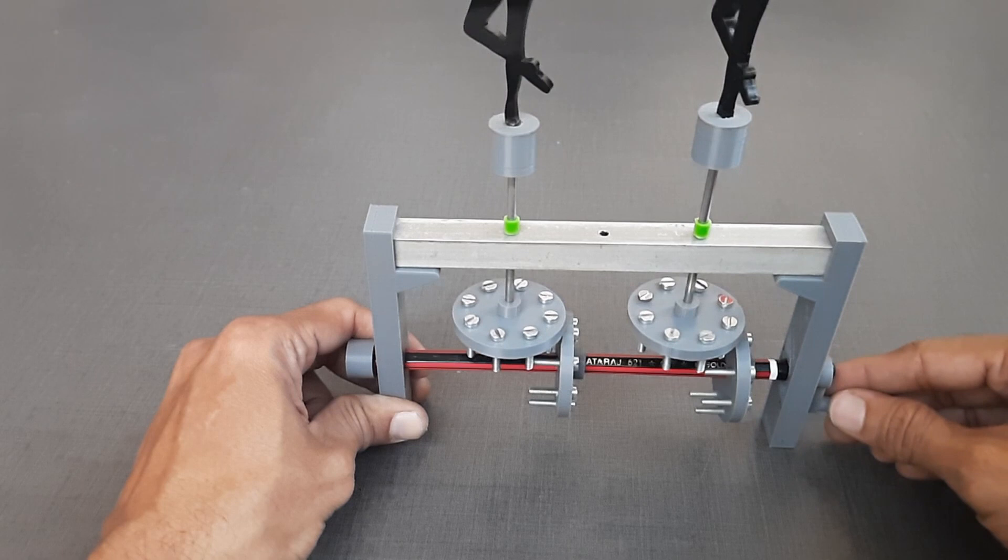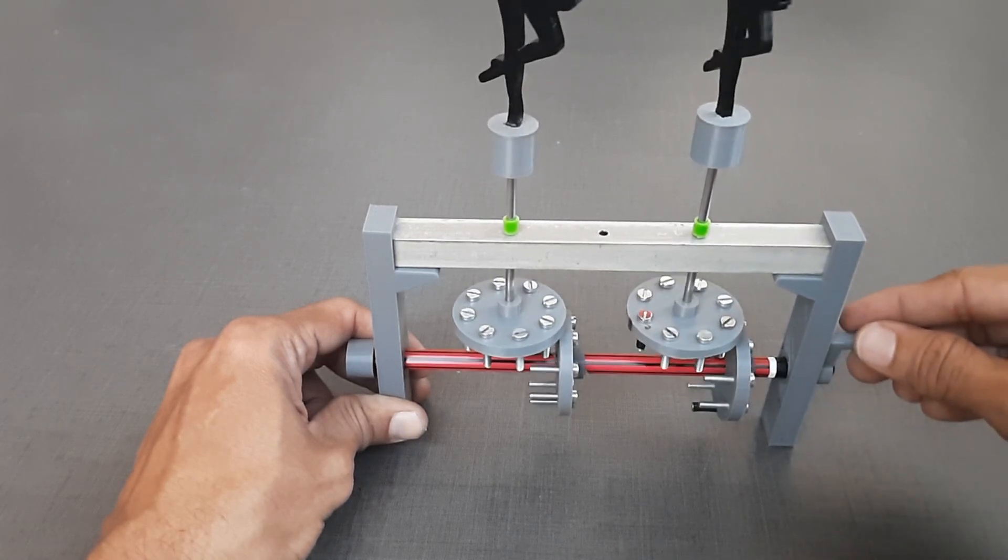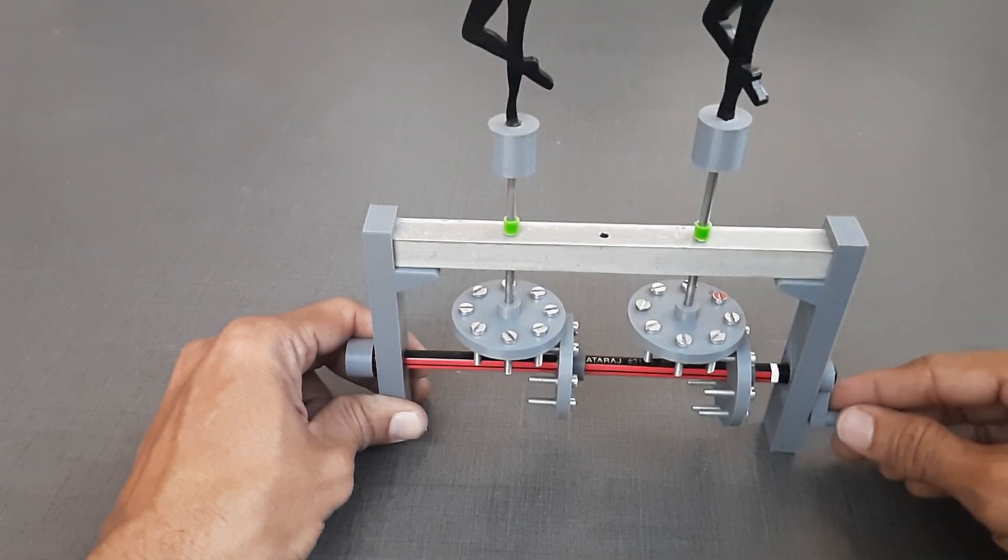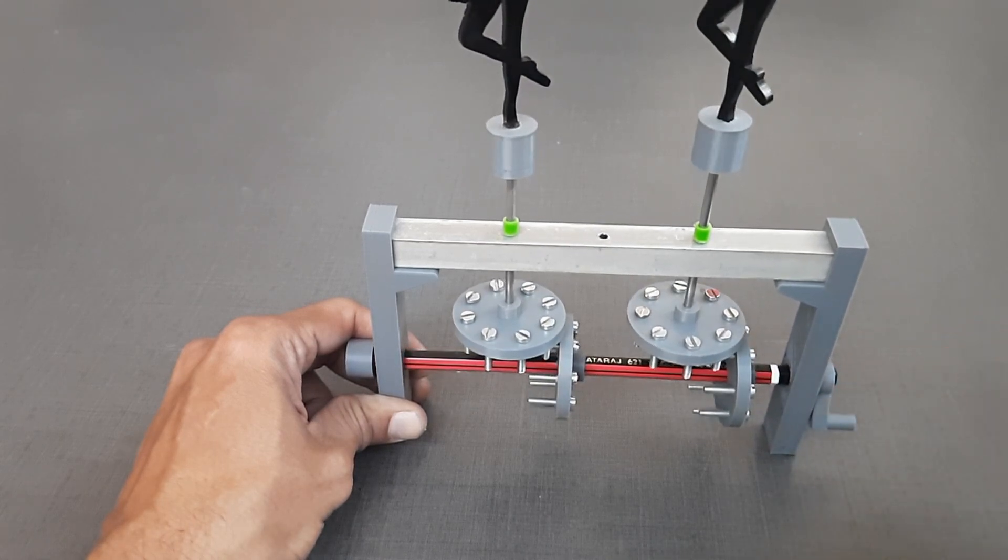Both dancers are taking turns in the same direction. As both wheels have equal number of pins, the number of turns each dancer makes is the same.